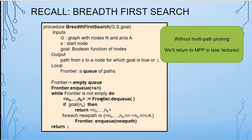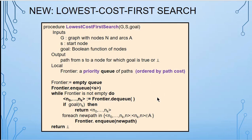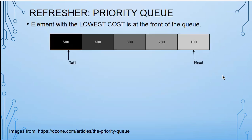This is the breadth-first search algorithm we saw before — I pulled off multi-path pruning just so you could see it more easily. In breadth-first search, our frontier is a queue and we add stuff onto the queue. Lowest cost first search is almost exactly the same, except instead of using a queue we use a priority queue, and the priority queue is ordered by path cost. So the key to understanding how lowest cost first search works is remembering what a priority queue is.